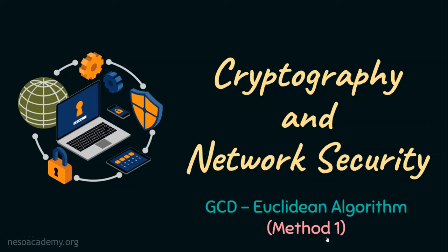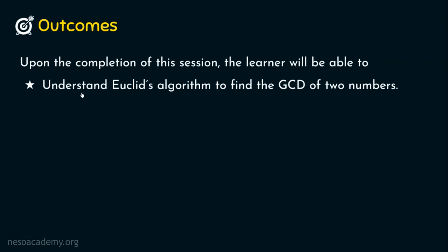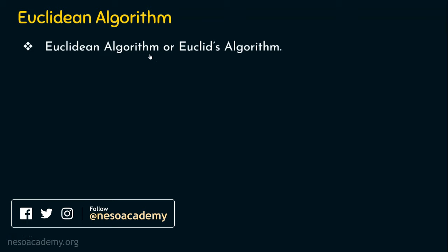Let's dive into the outcomes first. Upon the completion of this session, the learner will be able to understand Euclid's algorithm to find the greatest common divisor of two numbers. So it's very clear that we are going to focus on Euclid's algorithm, which is also called the Euclidean algorithm.